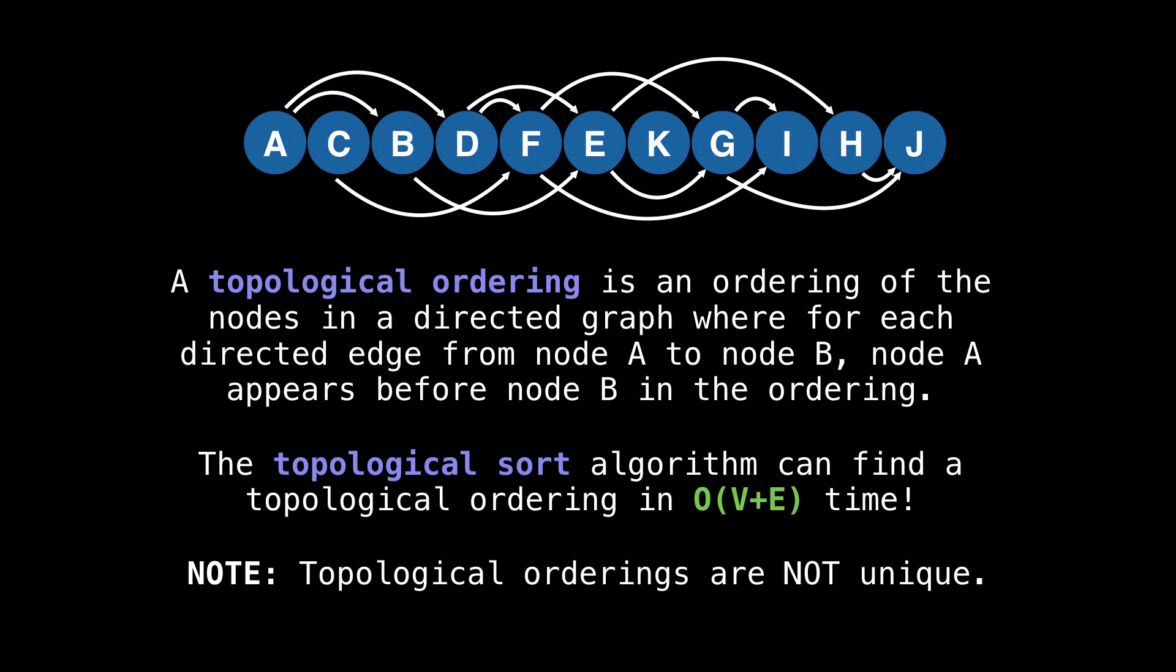An important note to make is that topological orderings are not unique. As you can imagine, there are multiple valid ways to enroll in courses such that you can still graduate or to compile a program and its dependencies in a different order than you previously did.